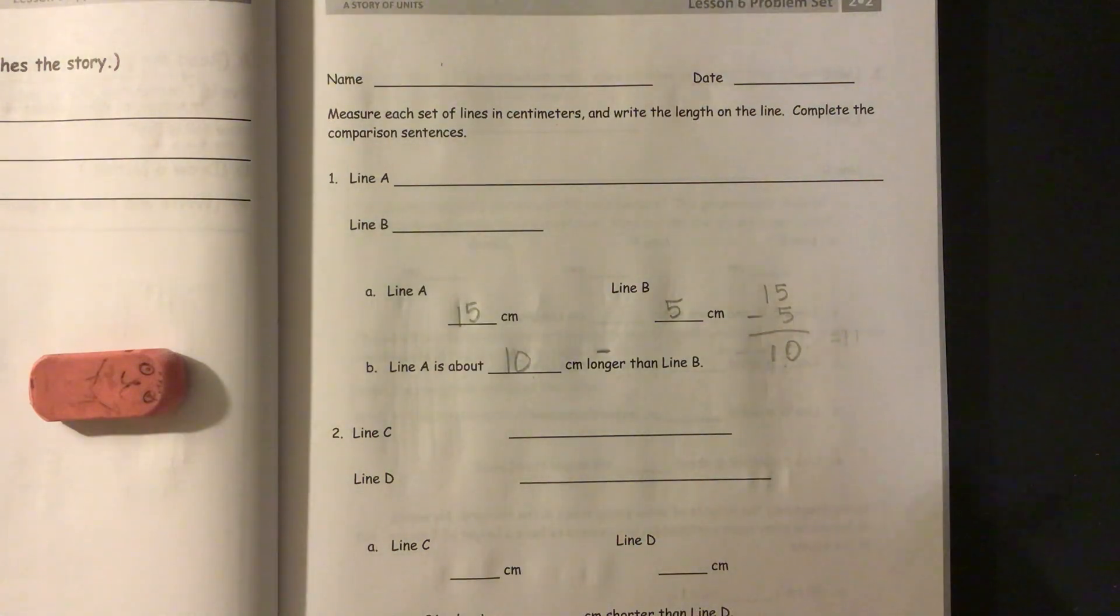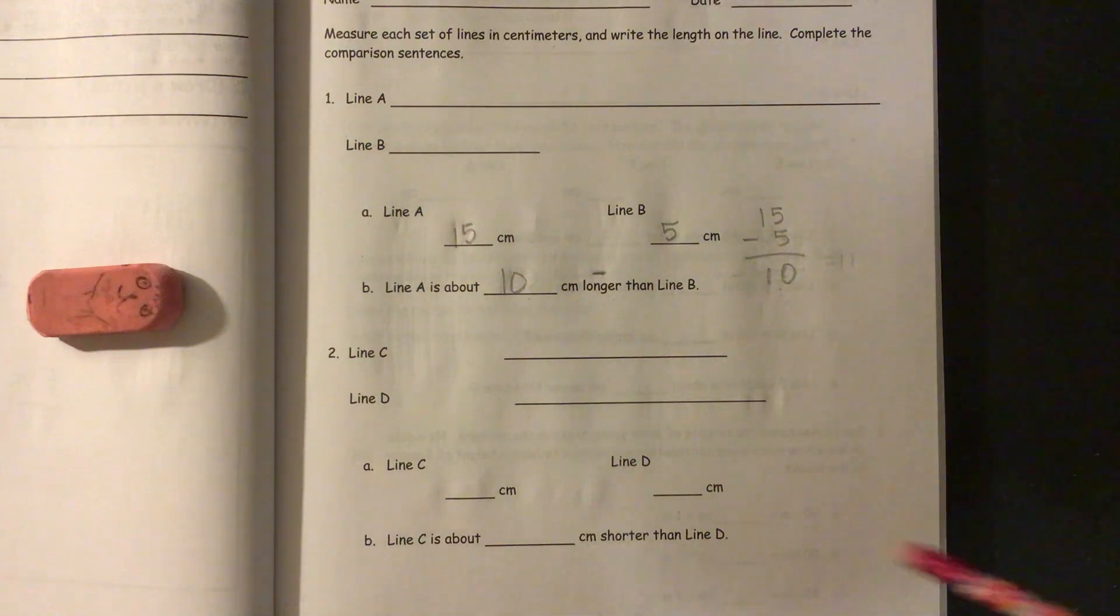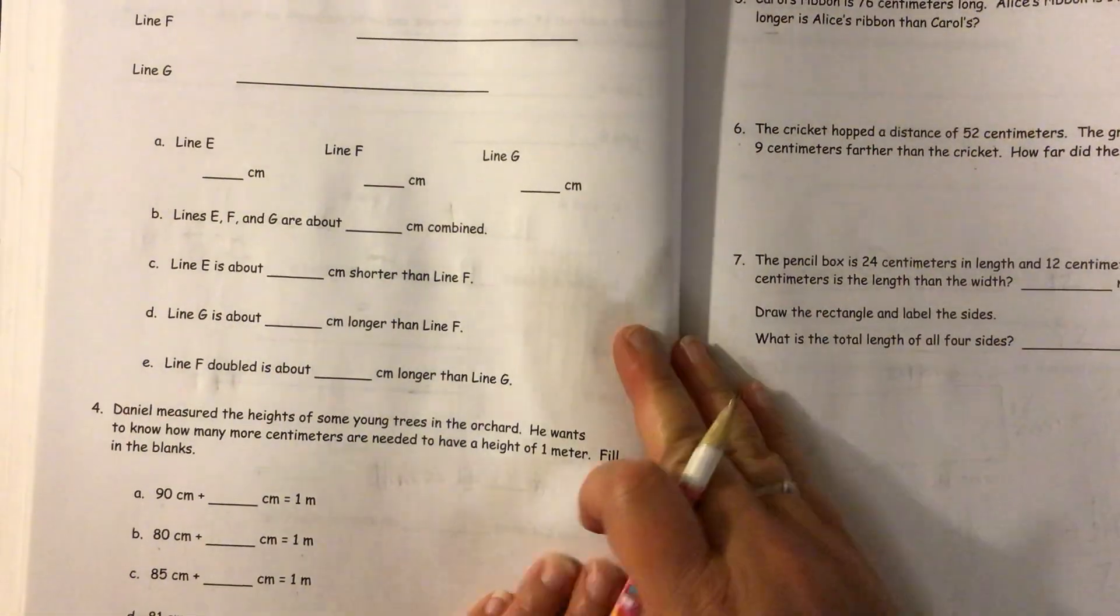Now you'll need to do that same process for number two with line C and D. Measure, write the measurements there. And shorter than means subtract. So we'll go to the back.